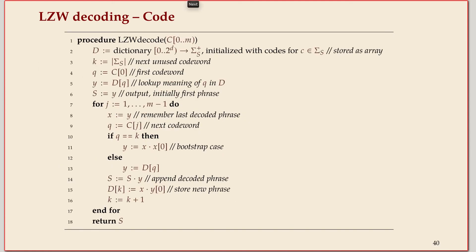The code for decoding is not very complicated even though it has this tricky case. As before, we will have a dictionary, but this time it stores a mapping from code words to strings — in encoding it was a trie storing a mapping from strings to code words, now we do it backwards. We also have the same k which is the next unused code word. We keep track of x and y, the phrases we're currently looking at, and s will be the output — the decoded string. For every code word in the coded text, we remember the last decoded thing, which initially is just the first character that the first code word decodes to.